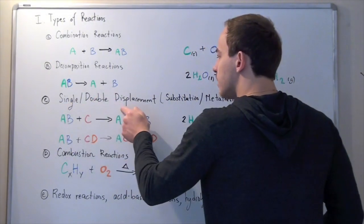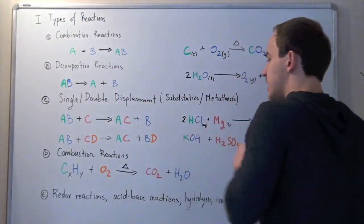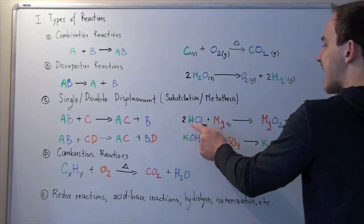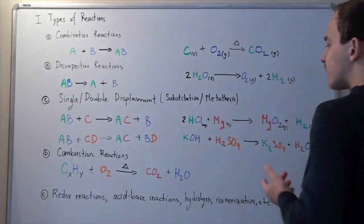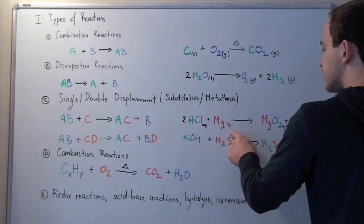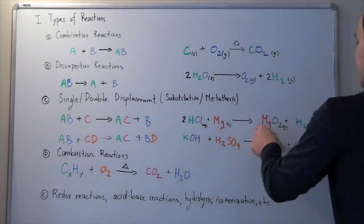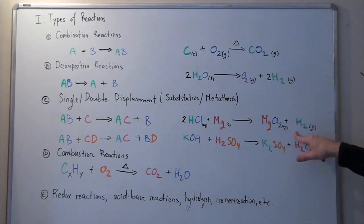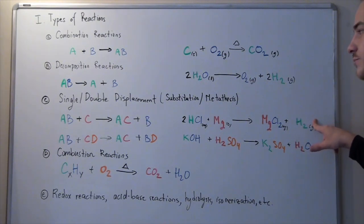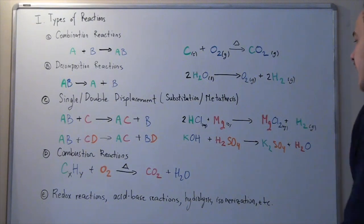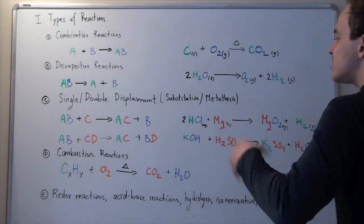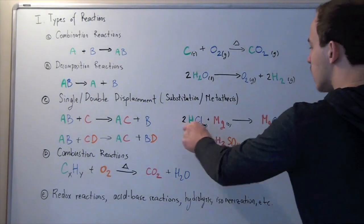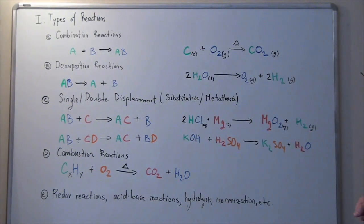A very common example is when two moles of hydrochloric acid in the aqueous state react with one mole of solid magnesium. This produces one mole of MgCl₂ in the aqueous state and one mole of diatomic H₂ in the gas state. This is a single displacement reaction in which Mg kicks off H, and this H combines with another H forming a diatomic gas.